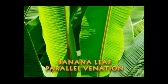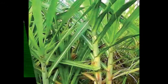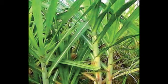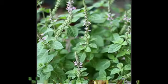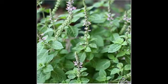For example, you can see the leaves of sugarcane, which has parallel venation and fibrous roots, and you can see the leaves of tulsi or basil, which has reticulate venation and a tap root.